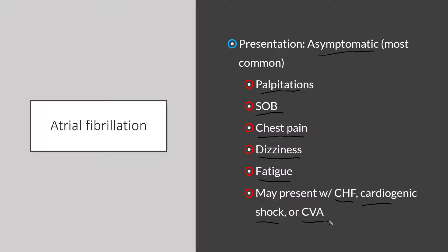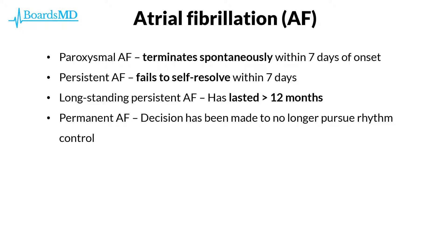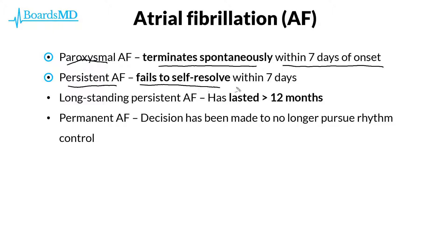When it comes to patients with atrial fibrillation, we can divide them into categories based on the persistence of their symptoms. We have patients who have paroxysmal atrial fibrillation, in which their abnormal rhythm will terminate spontaneously within seven days of onset. In contrast, we have patients with persistent AFib, in which their abnormal rhythm fails to self-resolve within seven days of onset. Additionally, we have patients categorized as having long-standing persistent atrial fibrillation, in which their abnormal rhythm has lasted for more than 12 months.